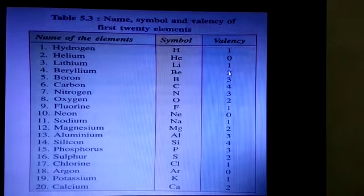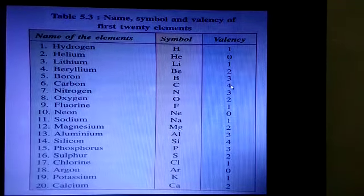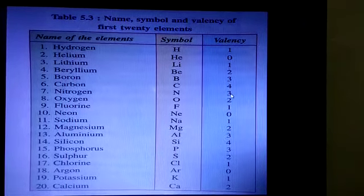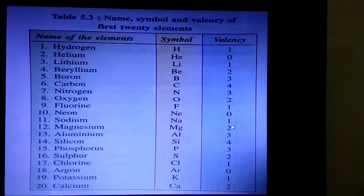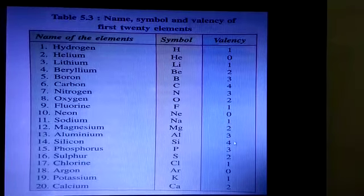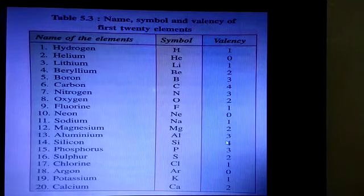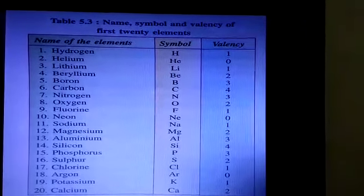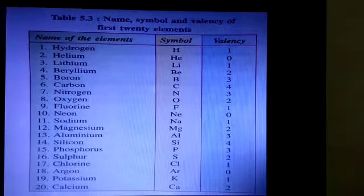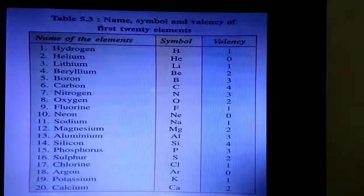And this sequence is always repeated after a certain interval. You can see here, 1, 2, 3, 4. Then valency starts decreasing, 3, 2, 1, then 0. Then again starts increasing 1, 2, 3, 4. So it is noticed that the valency of elements increases from 1 to 4 and then again it decreases to 1.